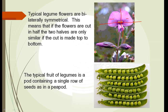Orchid flowers are similar. Down below you can see a typical fruit. These happen to be peas in a pea pod. You have a single row of fruit or seeds arranged in a pod, and that's typical of almost all legumes.